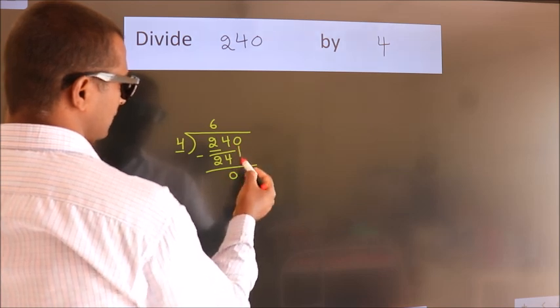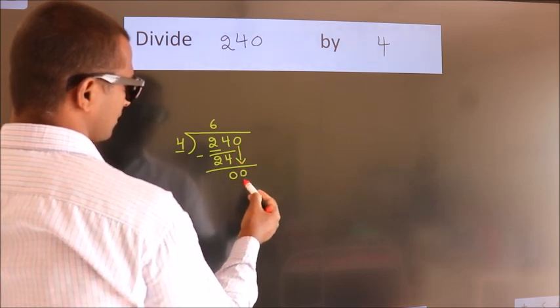After this, bring down the beside number. So 0 down. So 0.